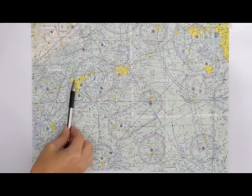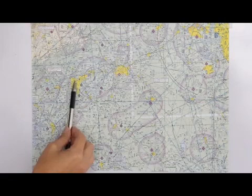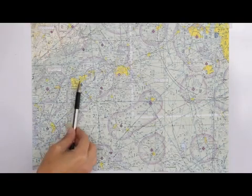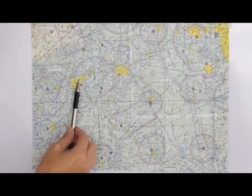You would have to reference the airport facility directory to see what time the tower is in use. This C, this bold C in the circle, represents CTAF, common traffic advisory frequency.